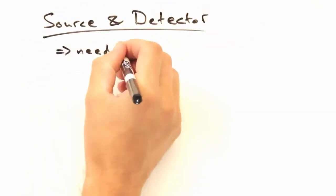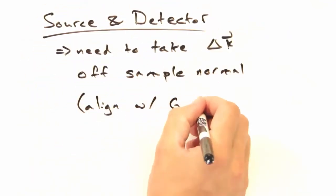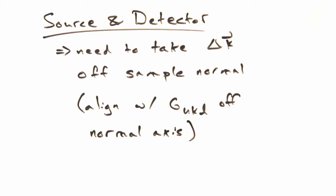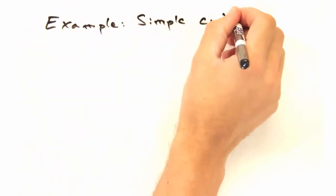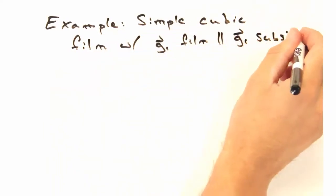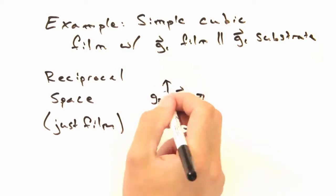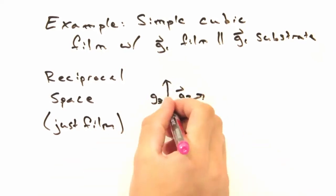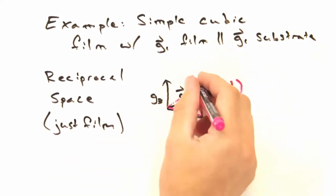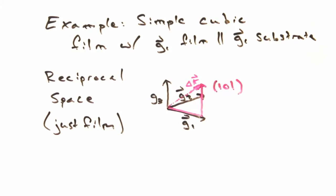We want to set up our source and detector to form a delta k that aligns with a g-vector at a particular hkl. As an example, consider a film made of a simple cubic structure. And for the moment, let's look at a cell that has a particular in-plane alignment. Does it matter which g-vector we align to? Nope, so long as it's a film g-vector that is off of the sample normal. Gotcha.